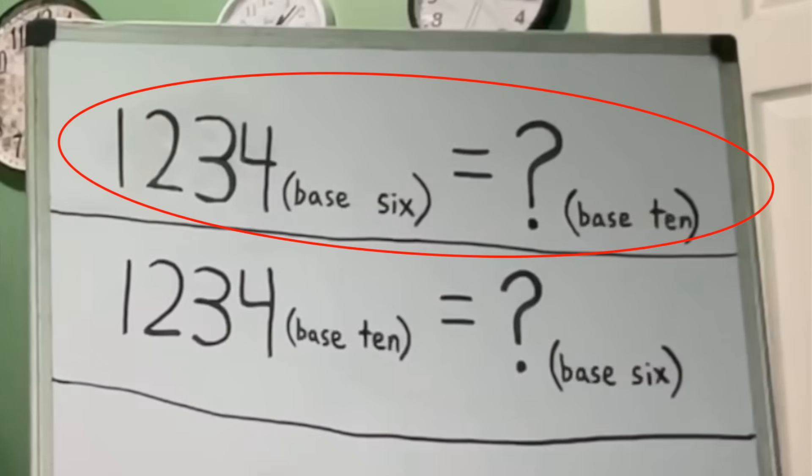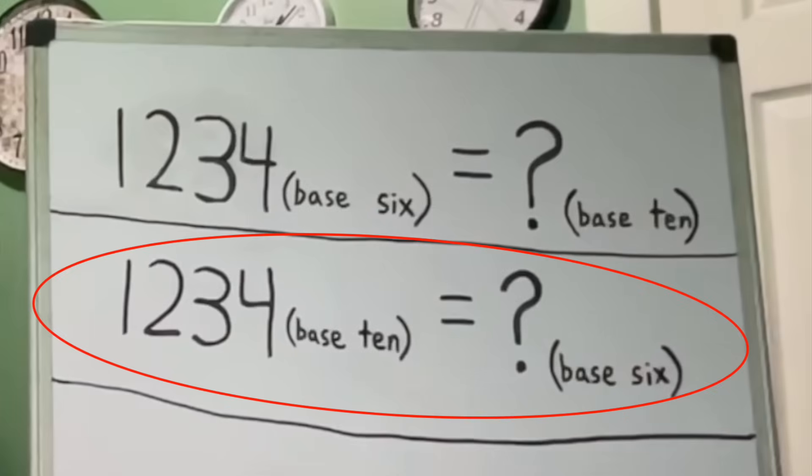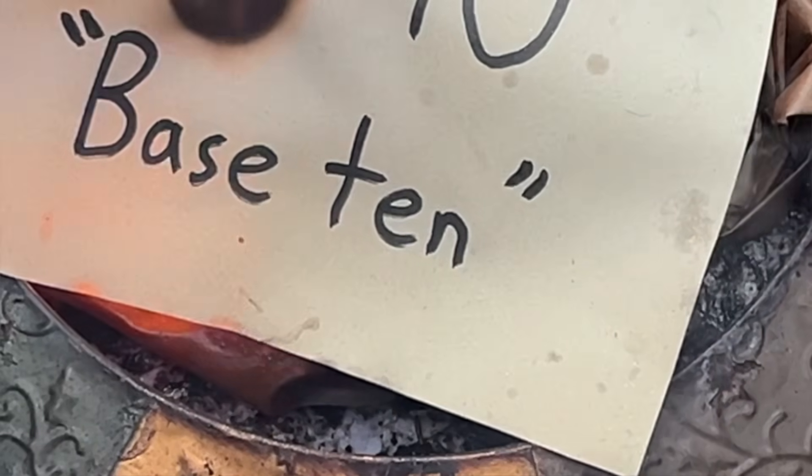I've made several episodes about numeral bases before, but mostly involving the first type of translation. I realized I've never really explained how to do the opposite, which can be a bit trickier unless you know the right shortcut. So today I'm going to show you how to translate in either of those directions, and along the way I'll also clarify some of the most important patterns in how different bases are connected.